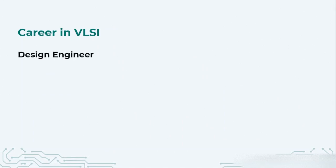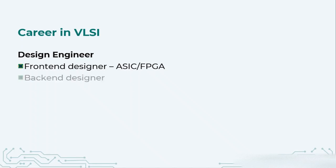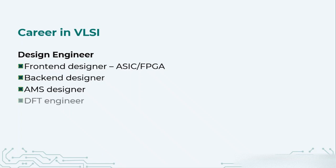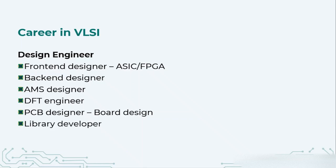Let us talk about the different career options in the VLSI industry. The first one is the design engineer. The design engineer works mainly on the frontend, designing the system either for ASIC or FPGA. The person can also work as a backend designer and will be responsible for analog and mixed signal designs, design for testability, and PCB design. Design engineers also develop libraries that can be used by other engineers, with the main focus on constructing new things and designing the logic of the complete system.